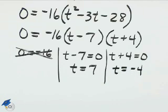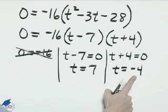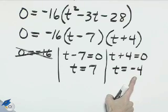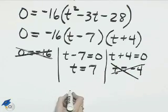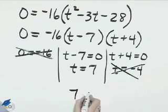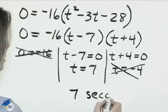Since this variable t stands for time, t equals negative 4 doesn't make sense in the word problem. So we can disregard that answer. That leaves us with 7 for the value of t and 7 seconds is the answer we need.